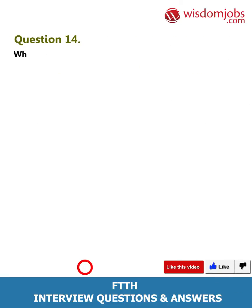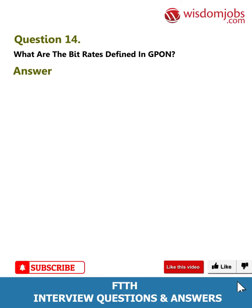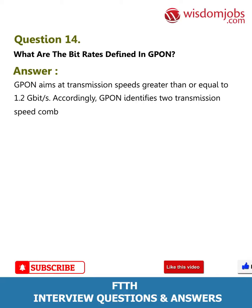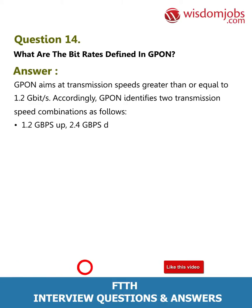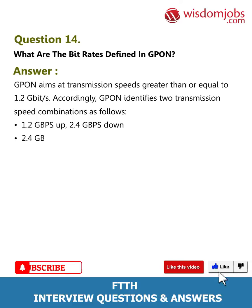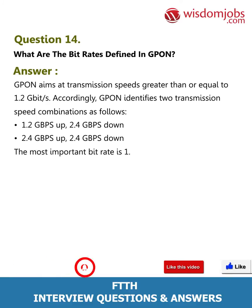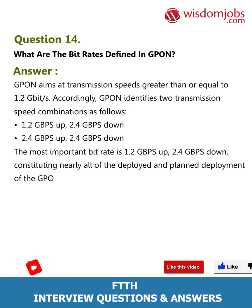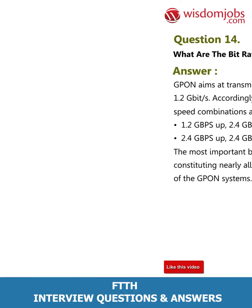Question 14: What are the bit rates defined in GPON? Answer: GPON aims at transmission speeds greater than or equal to 1.2 Gbps. Accordingly, GPON identifies two transmission speed combinations: 1.2 Gbps upstream / 2.4 Gbps downstream, and 2.4 Gbps upstream / 2.4 Gbps downstream. The most important bit rate is 1.2 Gbps up / 2.4 Gbps down, constituting nearly all of the deployed and planned deployment of GPON systems.